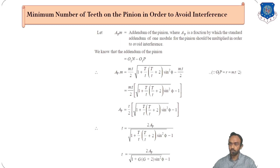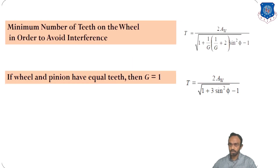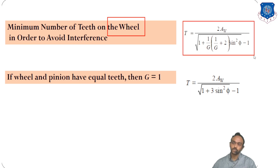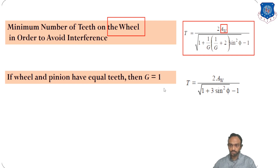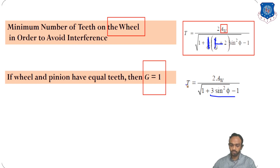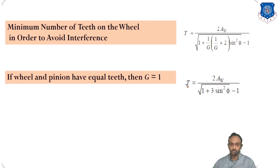The same derivation can be applied to the wheel, giving: T = 2aᵥᵥ·[√(1 + (1/g)·(1/g + 2)·sin²φ) − 1]⁻¹. For the special case where g = 1 (equal gears), the equation simplifies to: t = 2aₚ / [√(1 + 3·sin²φ) − 1].